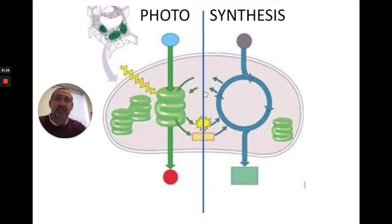There's two major parts to photosynthesis, the photoside, which requires light, and the synthesis side, which is where the molecules are being brought together, especially to make glucose.